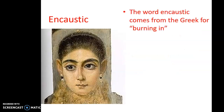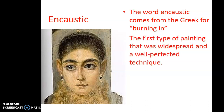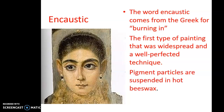Encaustic is a type of painting — the word comes from the Greek word meaning 'burning in.' It was considered to be the first type of painting that was widespread and well-perfected. It takes pigment particles and suspends them in hot beeswax, giving it a luminous quality. This particular piece on the left actually has some gold leafing in between some of those layers of wax.